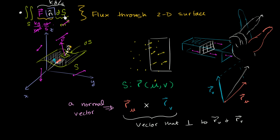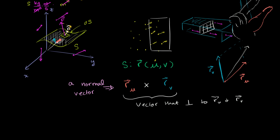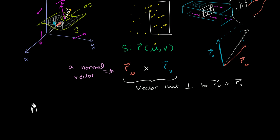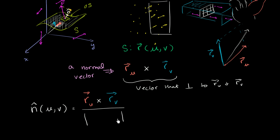In order to go from a normal vector to the unit normal vector, we just normalize it — divide by its magnitude. So the unit normal vector, as a function of u and v, is equal to the partial of r with respect to u crossed with the partial of r with respect to v, divided by the magnitude of that same cross product. And we're done — we have constructed a unit normal vector. In future videos, we'll do this with concrete examples.